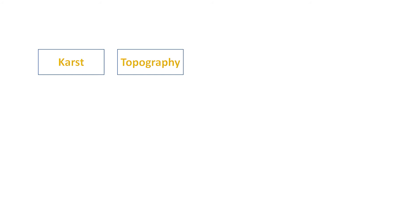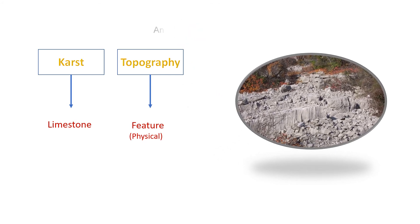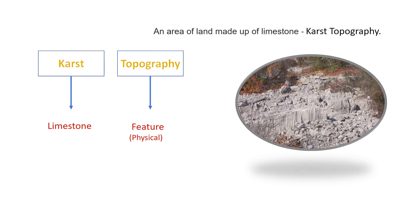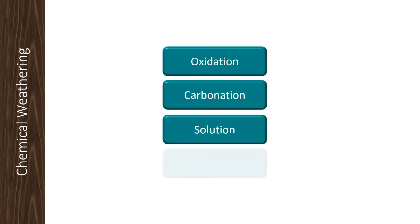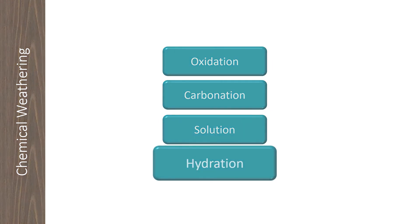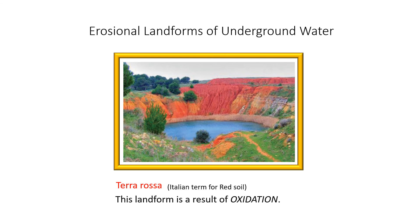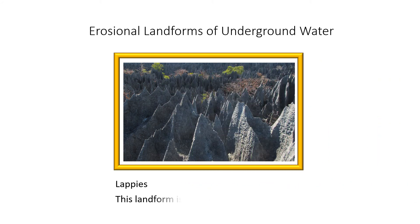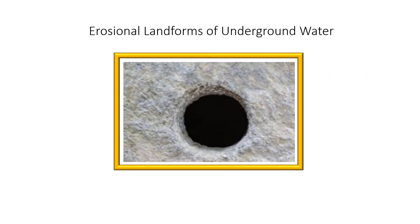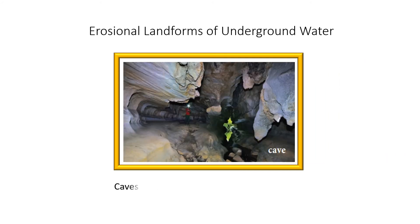Next, we go into the erosional landforms of underground water. Before that, we need to know about karst topography. Karst is derived from the Slavic language, which means limestone. We also need to recollect how underground water influences landforms. Terra Rosa: this type of red soil formation is the result of oxidation. Lapis: this type of karst topography is due to carbonation. When limestone rocks dissolve in water, landforms such as sinkholes and caves are formed.